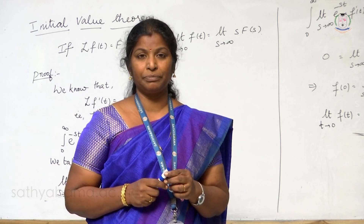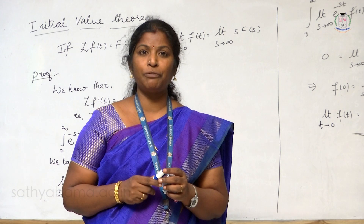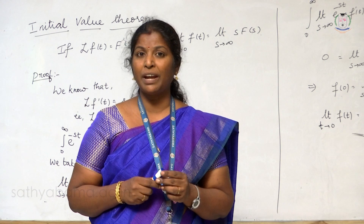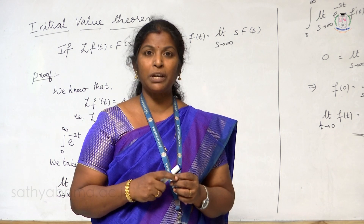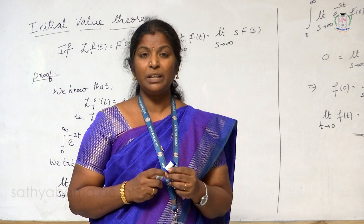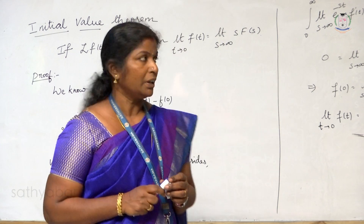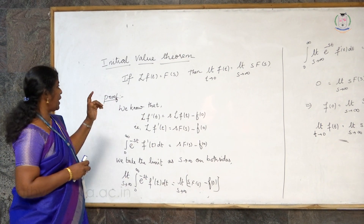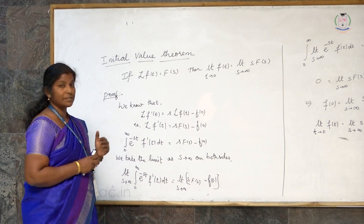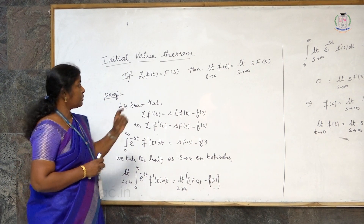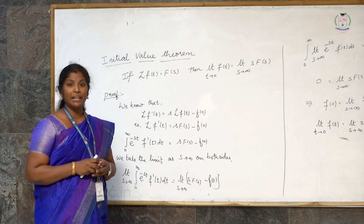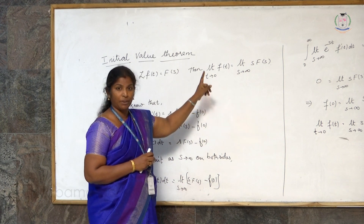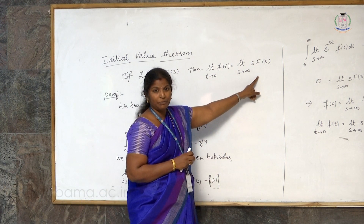In the initial value theorem, if you know the spectrum of the frequency domain of the function, we can find the initial and final value of the corresponding time domain signal by using initial and final value theorem. The statement of the initial value theorem: if L of f(t), that is the Laplace transform of f(t), is F(s), then limit t tends to 0 of f(t) is equal to limit s tends to infinity of s·F(s). That is, we can find the initial value of f(t) by using the spectrum F(s).